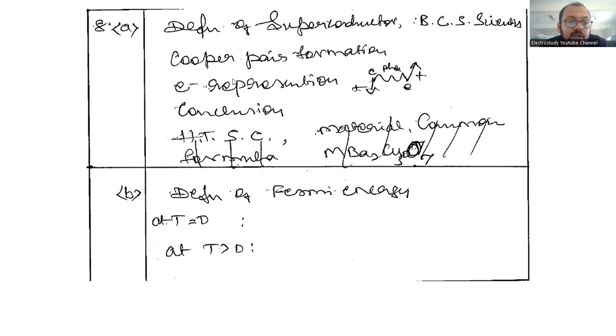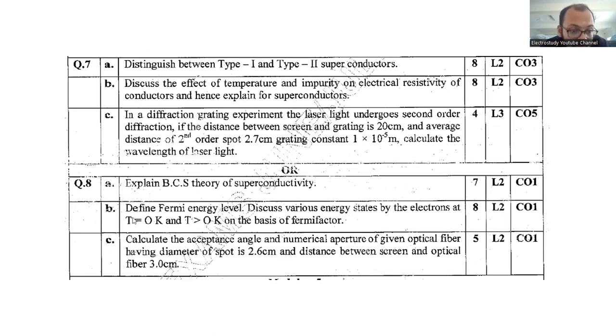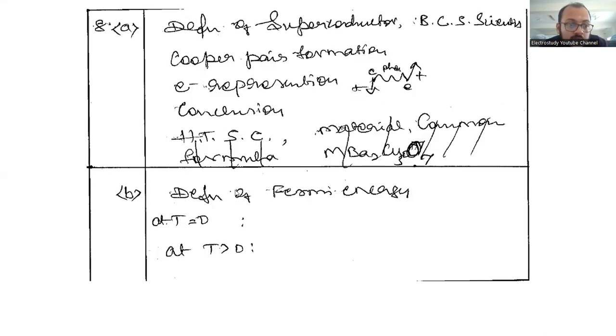Question 8b: Define Fermi energy level. You might have heard about Fermi-Dirac distribution in materials. Discuss the various energy states of electrons at 0 Kelvin and temperature greater than 0 Kelvin on the basis of Fermi factor. Write the equation for Fermi factor and Fermi energy level, explaining the conditions at T = 0 K and T > 0 K in the form of case 1 and case 2.